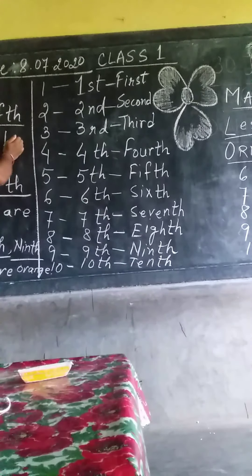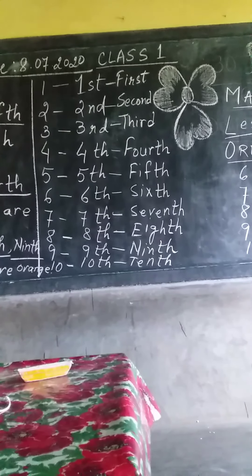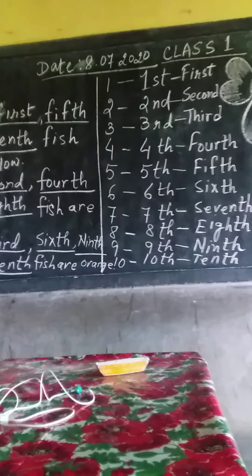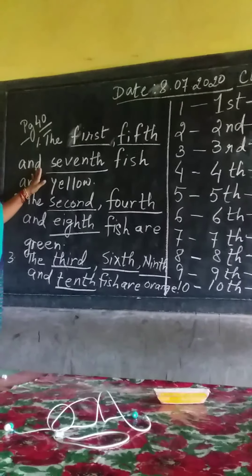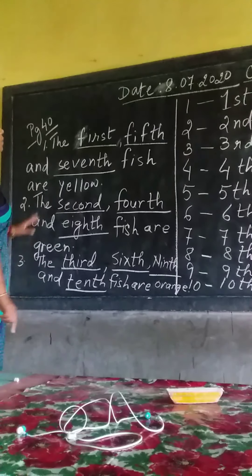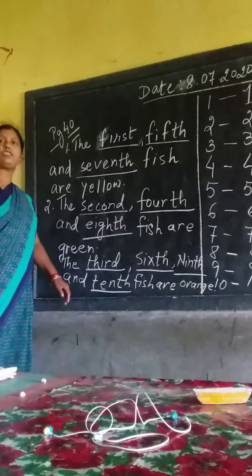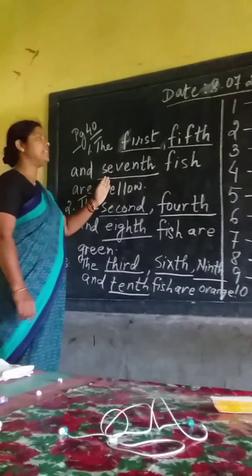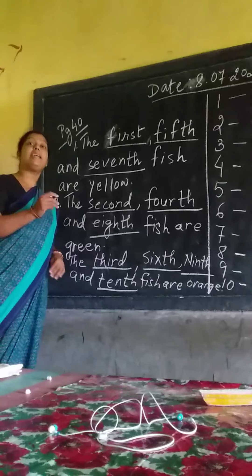We are going to do the first exercise on page 40. Please see, all of you — page 40. The first, fifth, and seventh fish are yellow. If you see your book, you will see the first, fifth, and seventh fish are yellow. Which color are they? They are yellow.